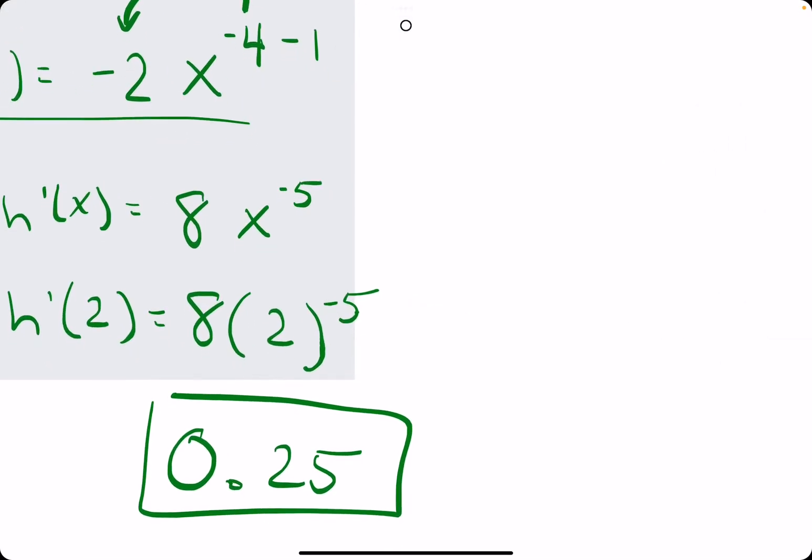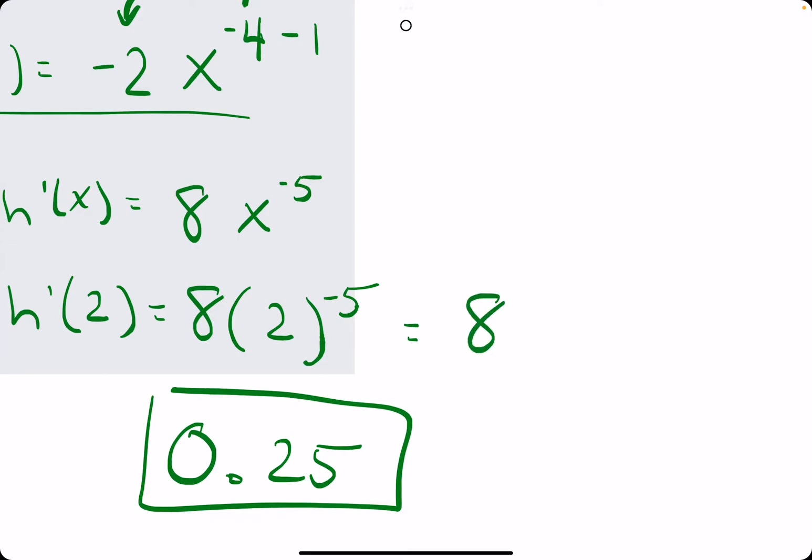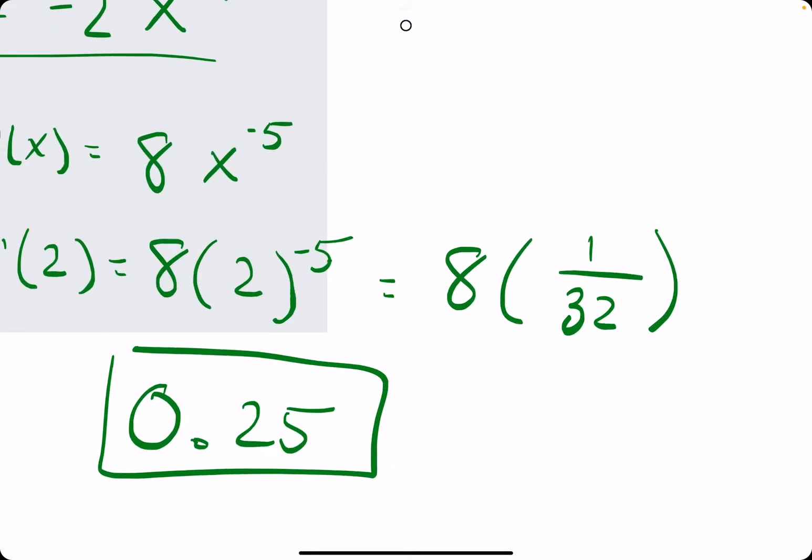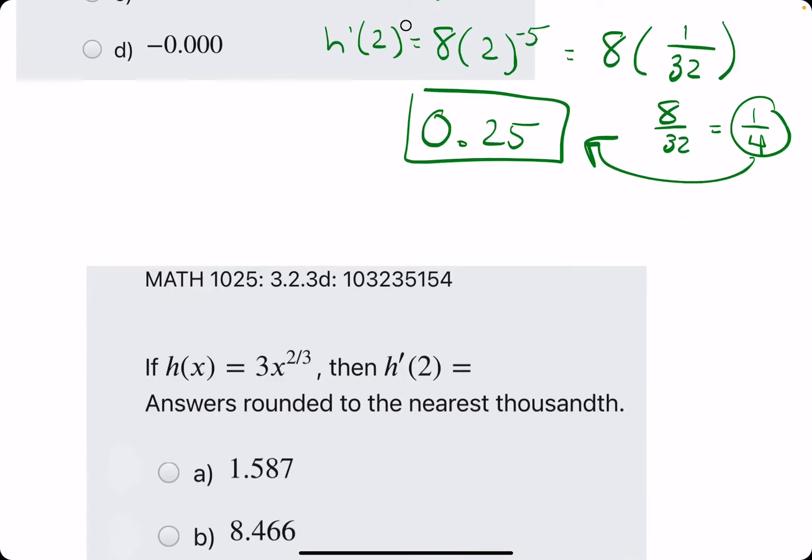So just for fun, had we worked this out by hand, we would have had 8. And then if we rewrote this with no negative exponents, we'd have 1 over 2 to the positive 5. 2 to the 5th is 32. Multiplying 8 times 1/32 gives us 8/32, which reduces to 1/4 or 0.25. So let's keep rolling. Let's do another example or two.